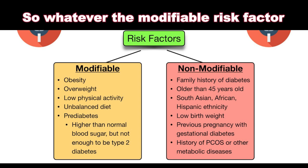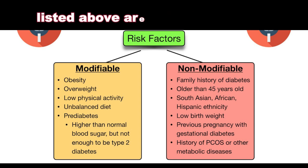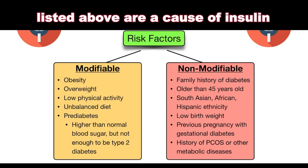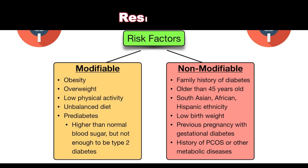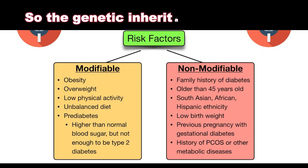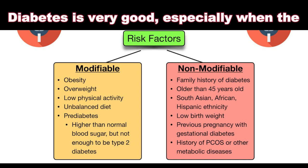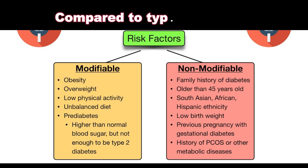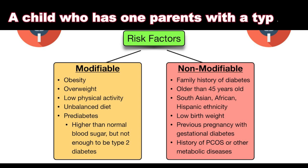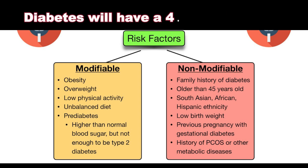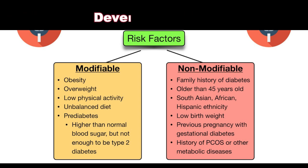The modifiable risk factors listed are a cause of insulin resistance. The genetic inheritance component of type 2 diabetes is very strong, especially when compared to type 1 diabetes. A child who has one parent with type 2 diabetes will have a 40% chance of developing type 2 diabetes.